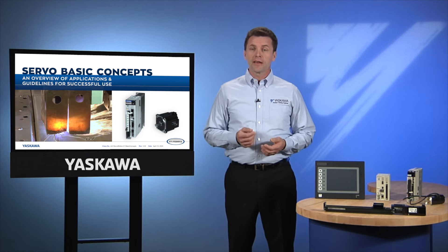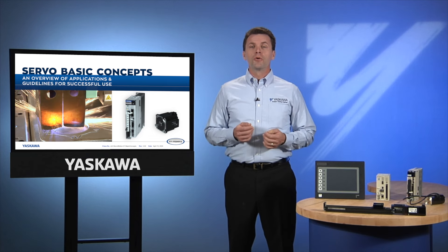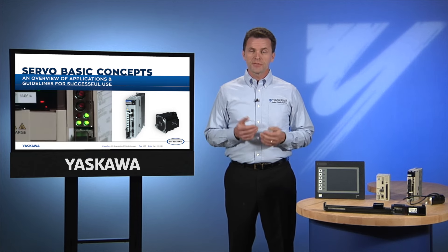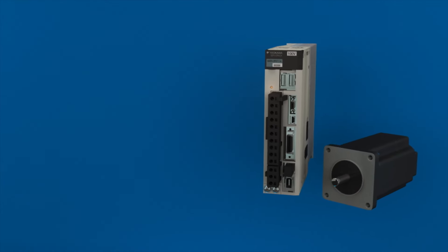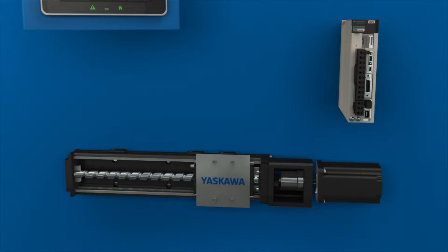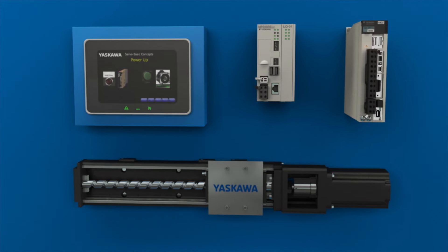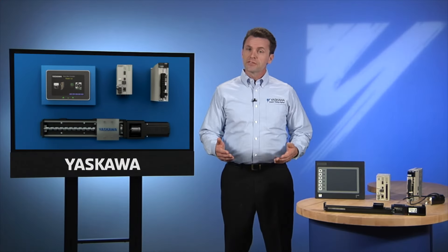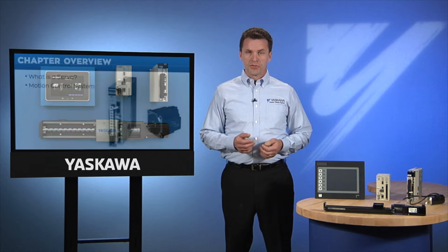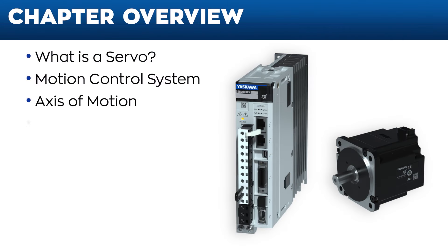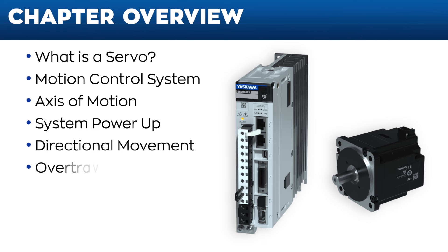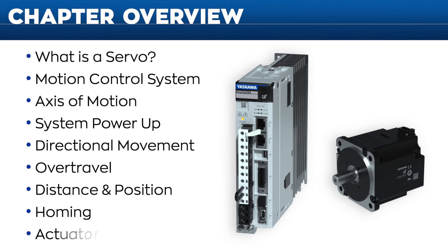That's what you'll get out of this training program — a practical overview of AC servo systems and how they are used. We'll define what a servo is, examine its components, and explore how it works within a motion control system. We'll examine some of the most important concepts used when applying a servo, including axis of motion, system power-up, directional movement, over-travel, distance and position, homing, and actuators.